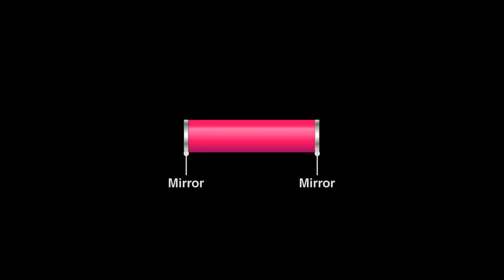Maiman silvered the ends to reflect the light within the ruby cylinder. He made the two ends of the rod astonishingly parallel to each other. From top to bottom, the distance between these two mirrors differs by no more than 200 nanometers.